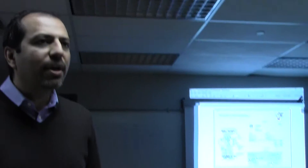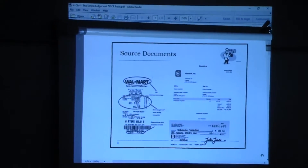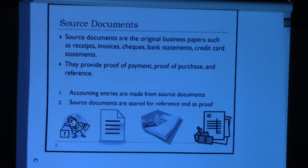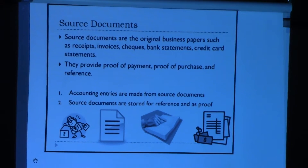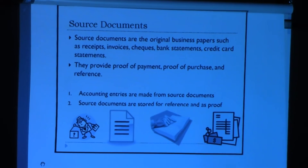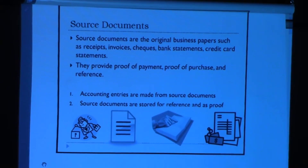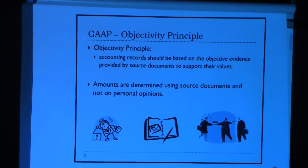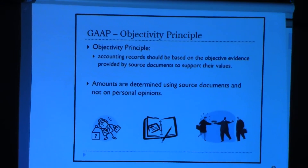We're going to quickly summarize from our previous discussion. Source documents are extremely important — they ensure that you have actual evidence of all your assets, liabilities, expenses, and revenues. This is where you take the amounts from to enter into your accounting records, which implies there is actual evidence in your records, meaning we are following the objectivity principle. Everything is based on actual documents and nothing is just an estimate.